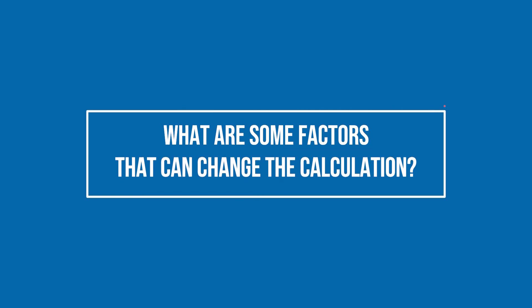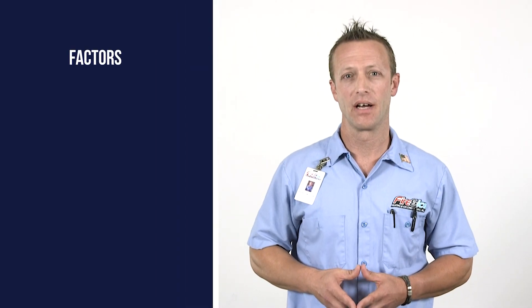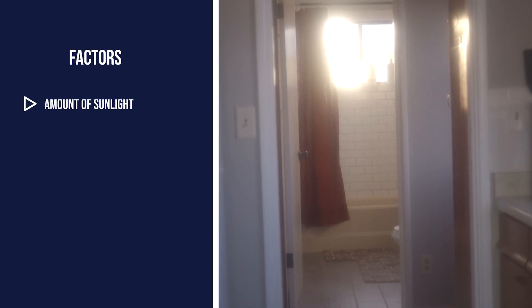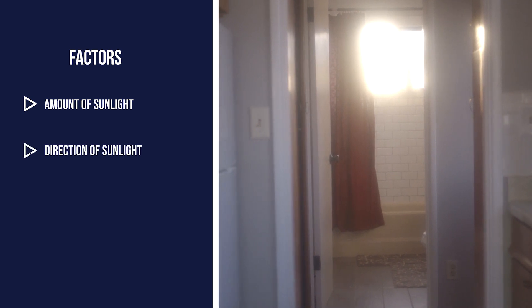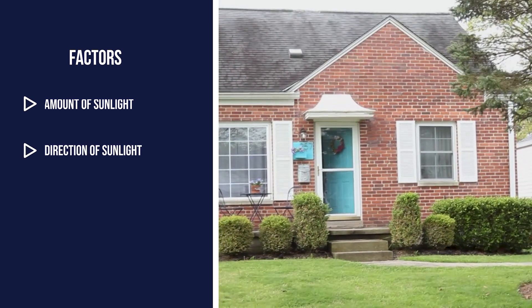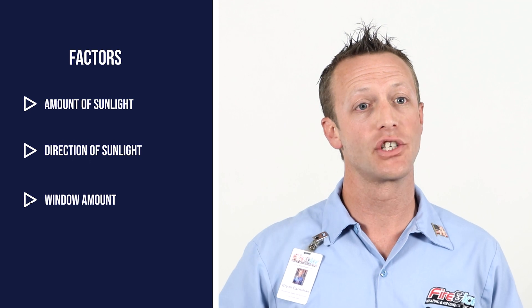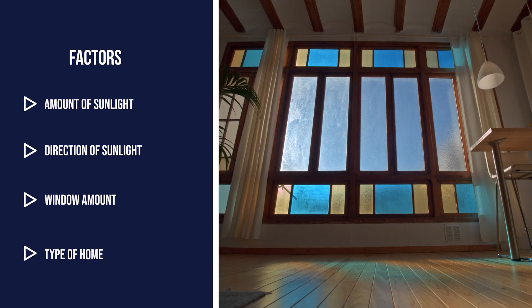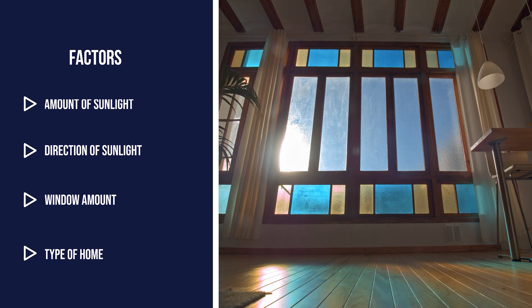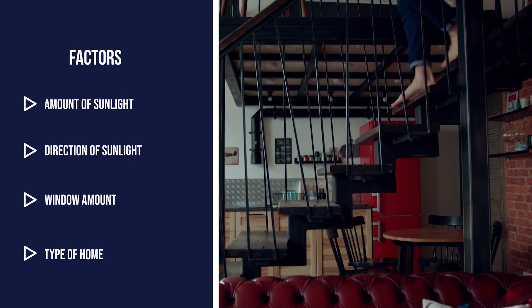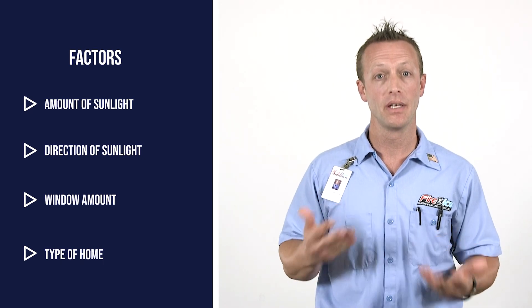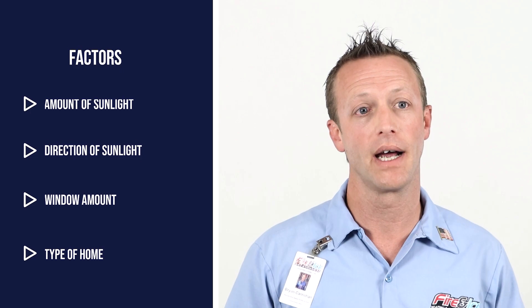What are some factors that can change the calculation? Many factors can change it — every home is custom, they're all different. Sunlight comes in from different directions; it sets in the west and rises in the east. So if your home is facing a certain direction and you have many windows on one side versus the other, the sun is going to be inside your home a lot more than another house facing a different direction. It also matters whether it's one-story or two-story — you'll have more insulation between floors in a two-story house than you would in a one-story house.